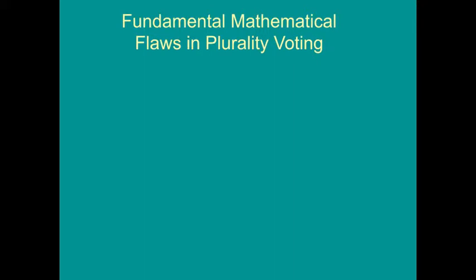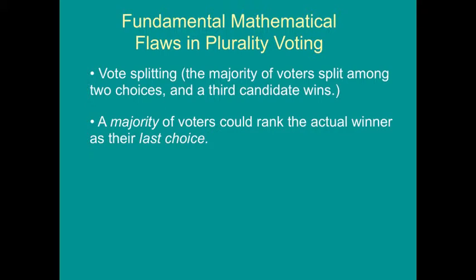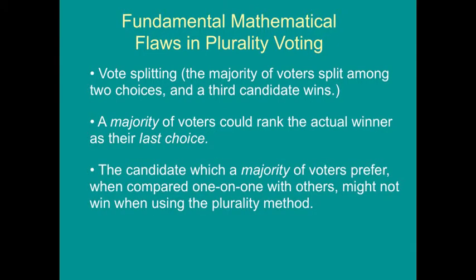In this video, we'll look at some fundamental mathematical flaws in plurality voting. First, there's vote splitting — that's when a majority of voters split among two choices, and a third candidate wins. Next, there's a problem that a majority of voters could rank the actual winner as their last choice. And another problem is that a candidate which a majority of voters prefer when compared one-on-one with others might not win when using the plurality method.